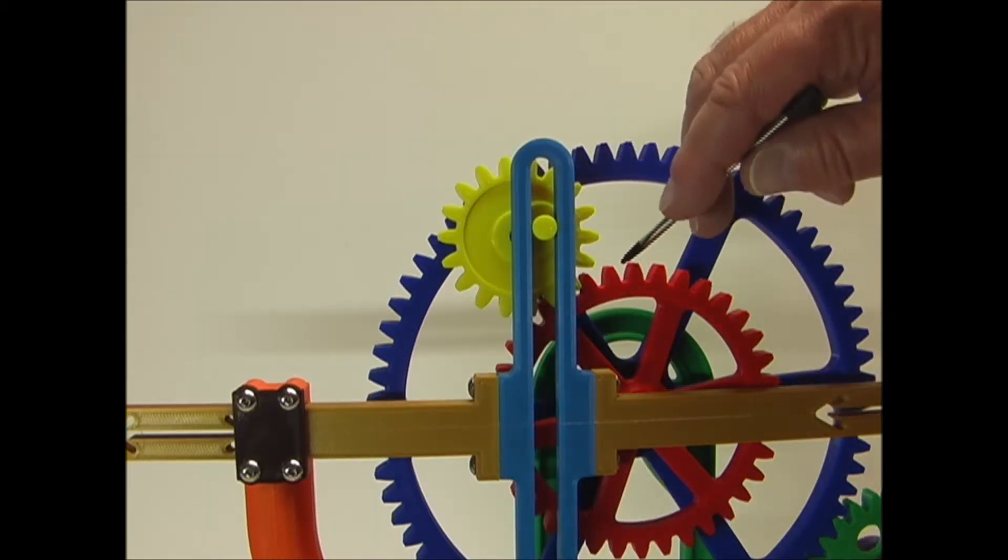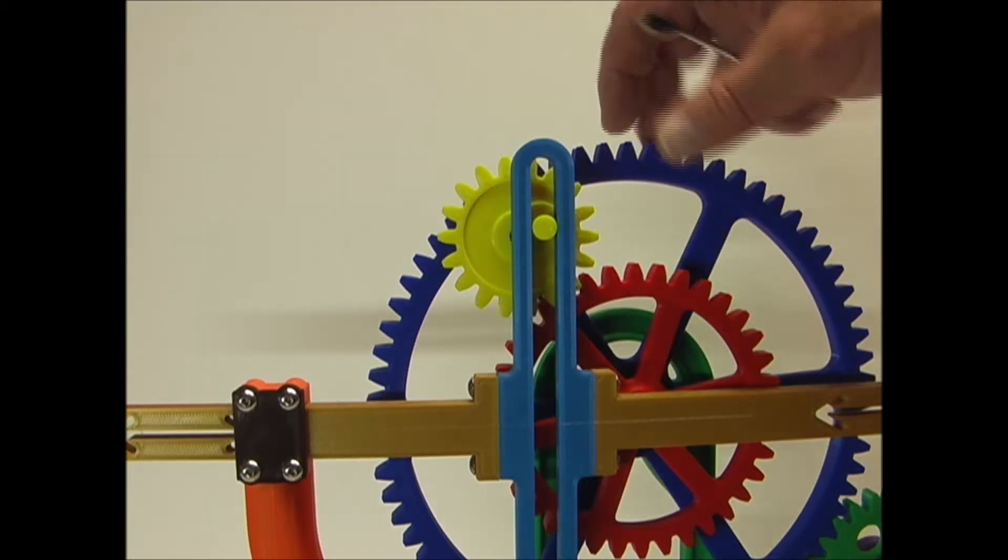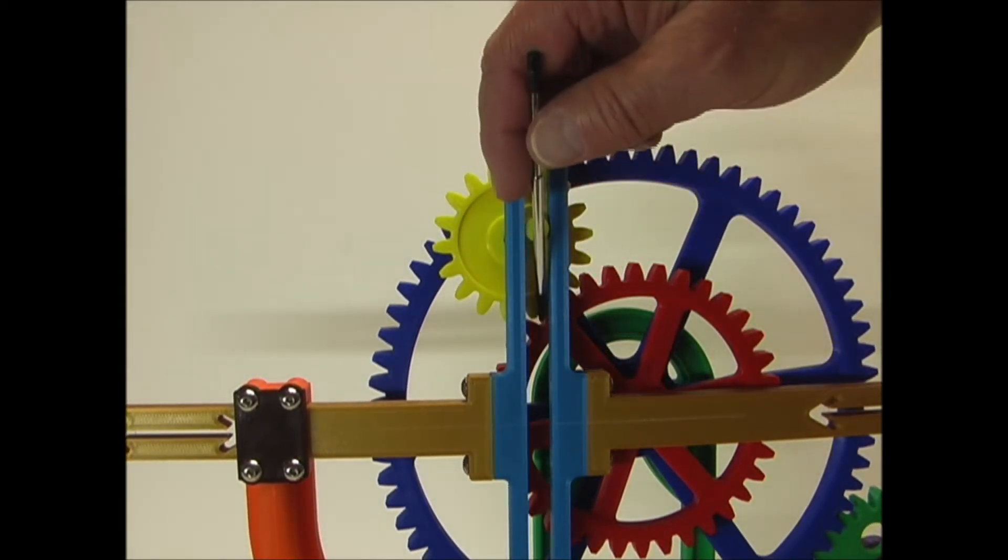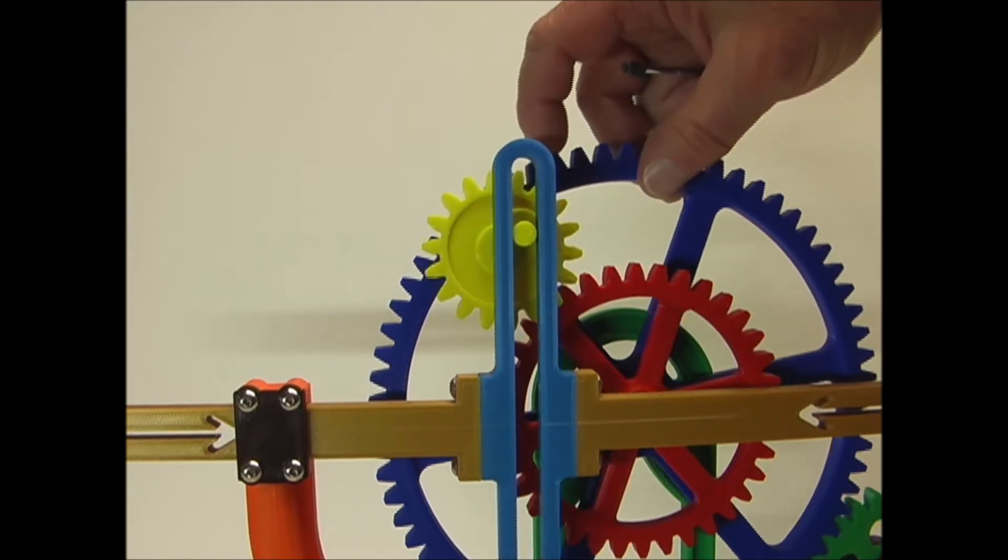This red gear is fixed and does not move. As the blue gear rotates, the yellow gear is in contact with the red gear, and it moves around it.